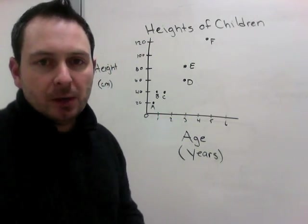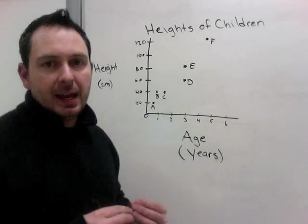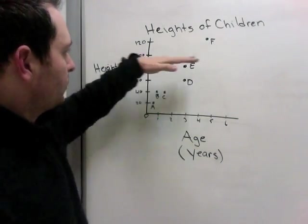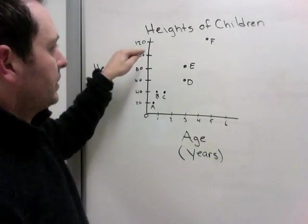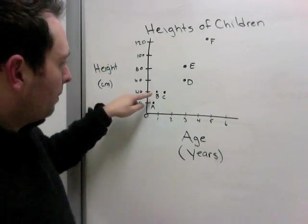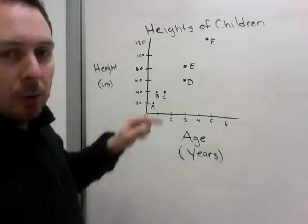And now some questions that you might ask. They might say, which two children are the same height? So, for height, we're looking this way. So 120, there's only one person. 80, there's only one person. But at 40 centimeters, B and C are both at the same height.